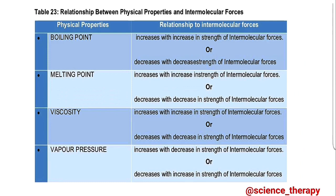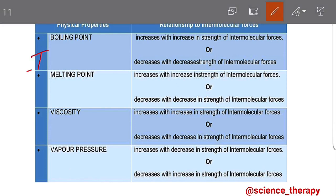Now let's look at the relationship between physical properties and intermolecular forces. The boiling point increases with an increase in the strength of intermolecular forces, or it decreases with a decrease in the strength of intermolecular forces. From this, we can deduce that intermolecular forces are directly proportional to boiling point. The stronger the intermolecular forces, the higher the boiling point; the weaker the intermolecular forces, the lower the boiling point.